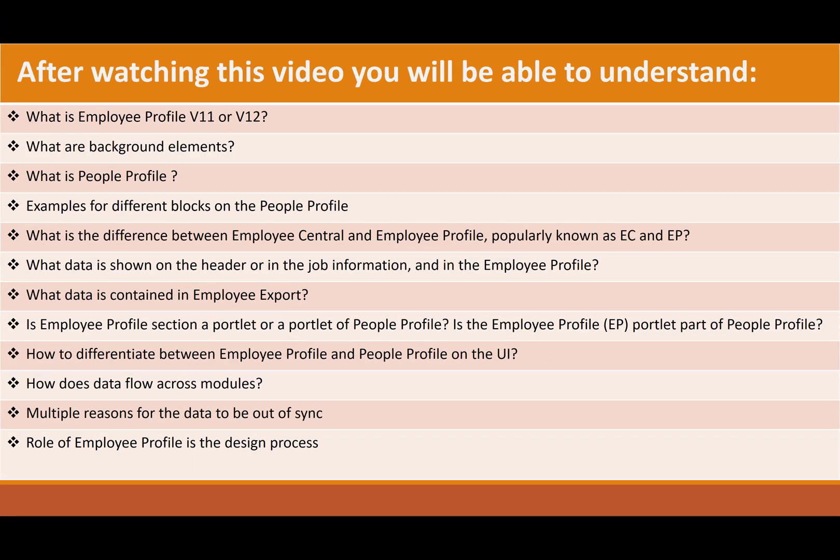After watching this video you should be able to understand what is employee profile version 11 or version 12, what are background elements, what is people profile, examples for different blocks on the people profile, what is the difference between employee central and employee profile (popularly known as EC and EP), what data is shown on the header or in the job information and in the employee profile, what data is contained in the employee export, is the employee profile section a portlet or a portlet of people profile, how to differentiate between employee profile and people profile on the UI, how data flows across different modules, multiple reasons for the data to be out of sync, and the role of employee profile in the design process.